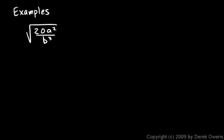How do we simplify this? Well, as usual, let's rewrite it and try to factor this. 20 is 4 times 5, and we still have the a squared, and in the denominator we have b cubed, which is b squared times b.